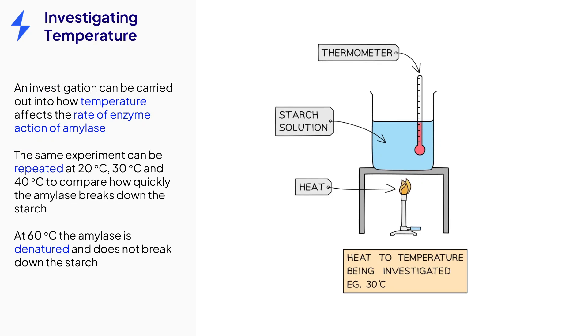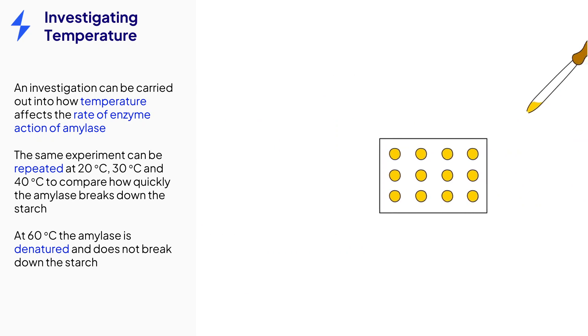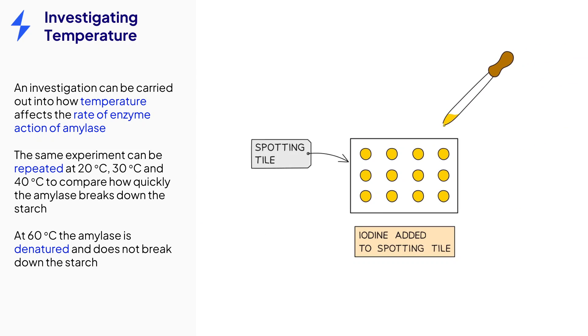First, we start by heating a solution containing starch to a set temperature, such as 30 degrees Celsius. This can be done using a Bunsen burner or a water bath. Whilst waiting for the solution to reach the correct temperature, the spotting tile can be prepared by placing a couple of drops of iodine into each of the wells.